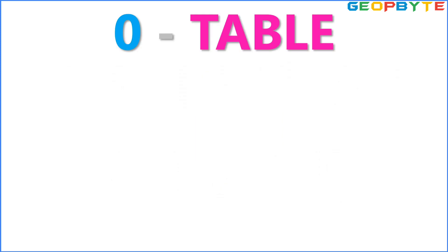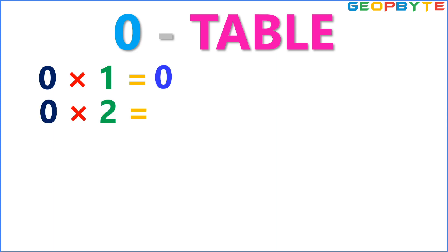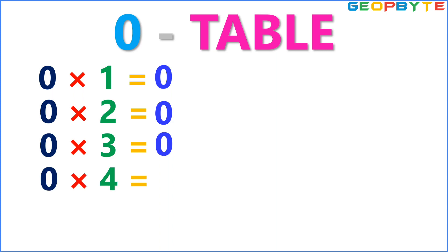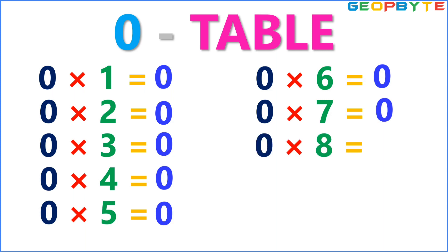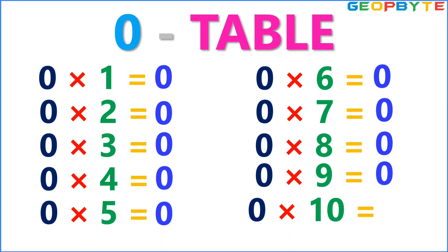First, let us see the 0 table. 0 1s are 0. 0 2s are 0. 0 3s are 0. 0 4s are 0. 0 5s are 0. 0 6s are 0. 0 7s are 0. 0 8s are 0. 0 9s are 0. 0 10s are 0.